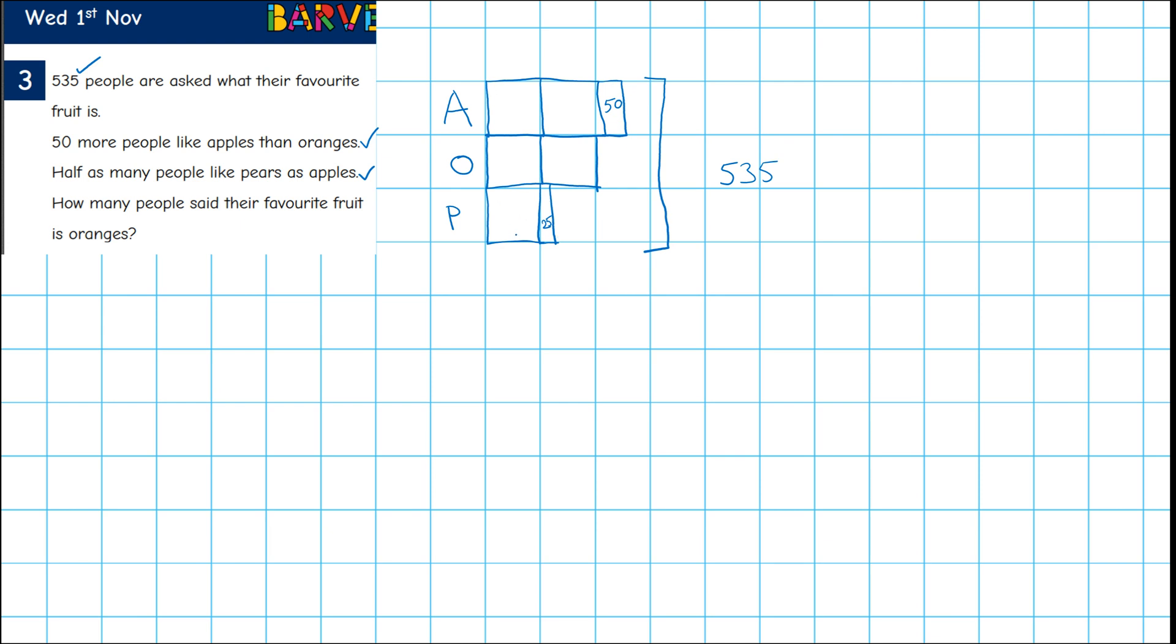So if I subtract, so it's 50 plus 25 is 75. If I subtract 75 from 535, that gives me 460.